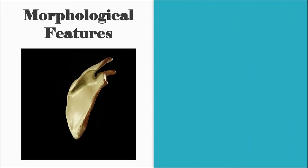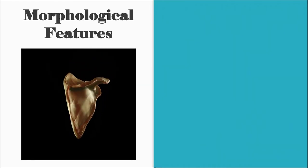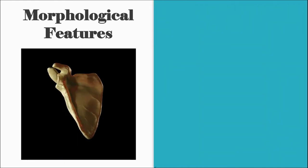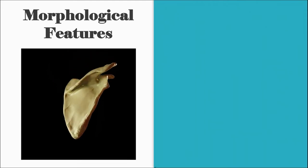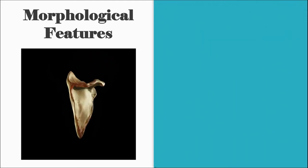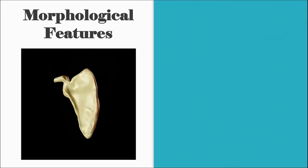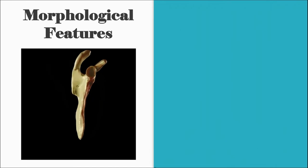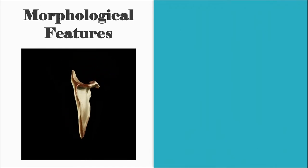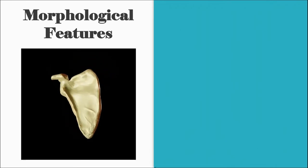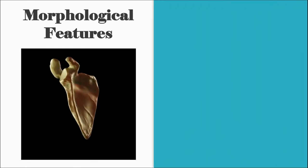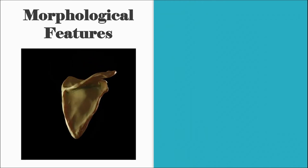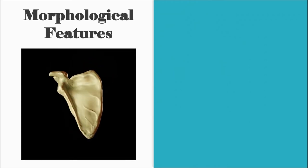Let's look at the morphological features. As I said, scapula means a small shovel. If you calculate the vertical extent, it would roughly extend from the second thoracic vertebra to the seventh or eighth thoracic vertebra.